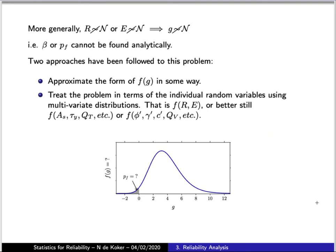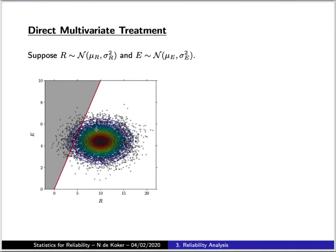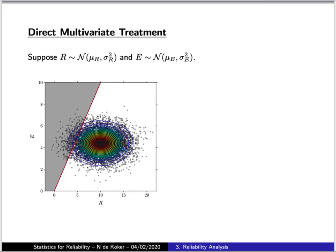For example, in the case of the steel rod in tension that we started with, we could treat the cross-section area of the steel rod, the yield stress of the steel, the imposed tensile load, and other parameters as the random variables. So how do we treat this problem in a multivariate sense?